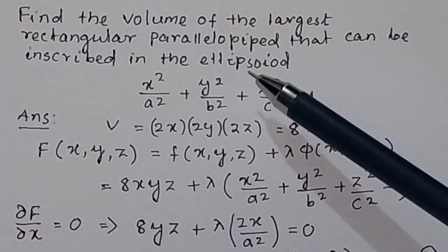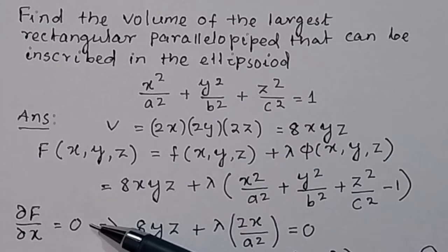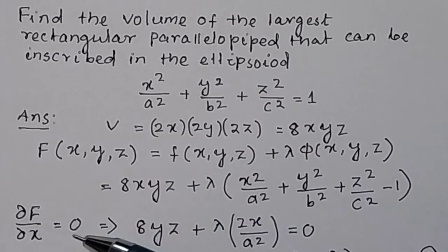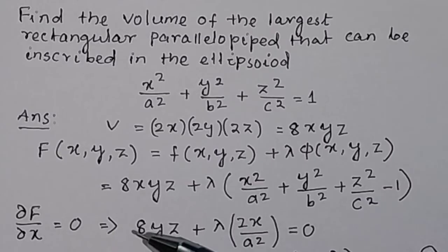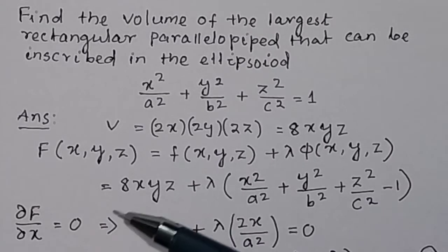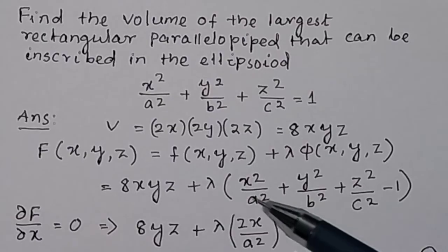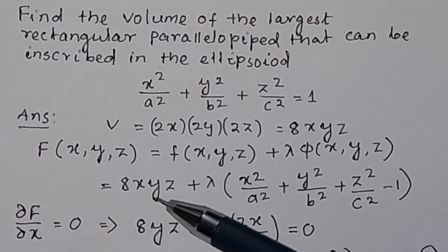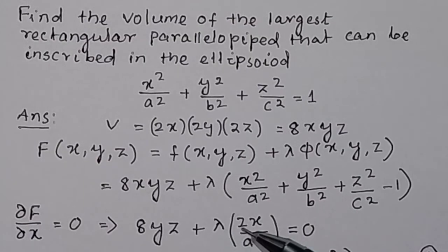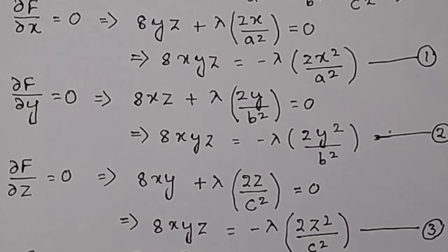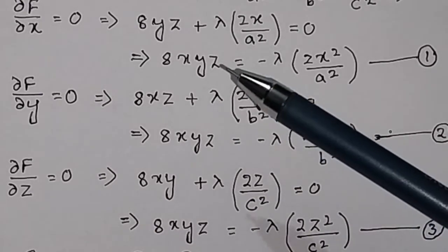We take the partial derivative of the function with respect to x equal to 0, with respect to y equal to 0, and with respect to z equal to 0. Taking the partial derivative of 8xyz with respect to x gives 8yz, and for the constraint term we get λ × 2x/a², so the equation becomes 8yz + λ(2x/a²) = 0.